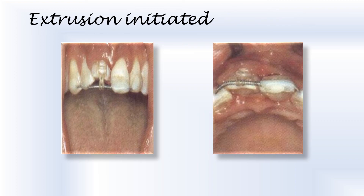Extrusion is initiated by activating elastic traction. The direction of traction should be such that the tooth moves out purely in the axial direction. After about 10 days, you can see that the tooth begins to loosen and starts moving out. However, if after 10 days no movement is observed, local anesthetic is administered, the tooth is slightly loosened with the help of a forcep, and the orthodontic extrusion process is continued.